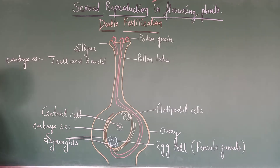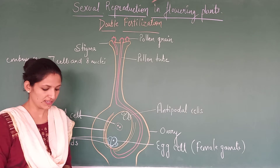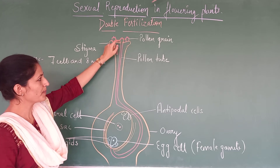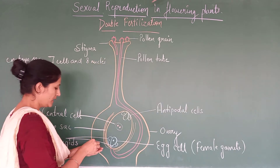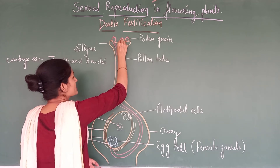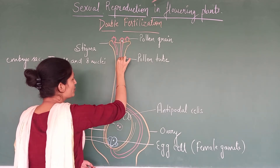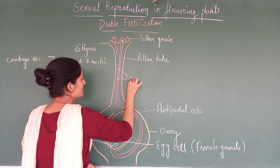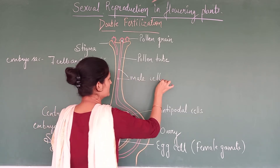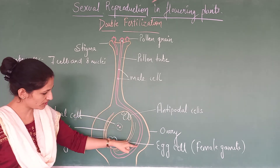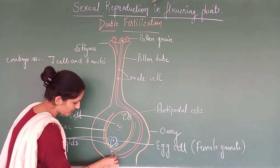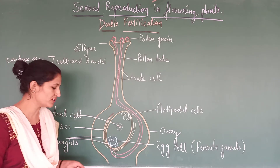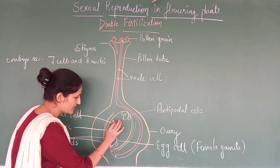This is the 7-cell stage of the embryo sac. Now we will see the procedure of fertilization. When the pollen grains fall on the stigma, they will form the pollen tube. Inside it there is a male generative cell, which will divide mitotically to form 2 male cells. These 2 male cells will travel through the pollen tube, which will then get ruptured, and will release these male gametes into the embryo sac.